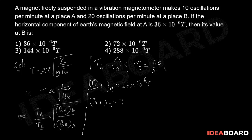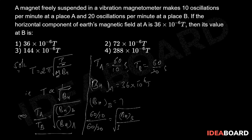Now substituting all the values into the formula: TA/TB = √(BHB / BHA). That is, (60/10) divided by (60/20) equals √(BHB divided by 36×10⁻⁶ tesla).